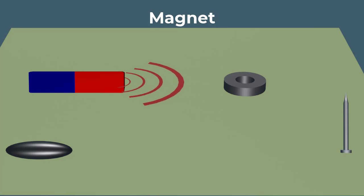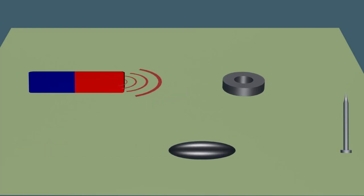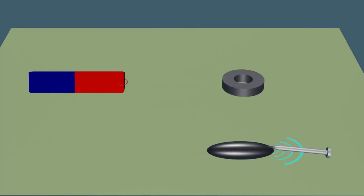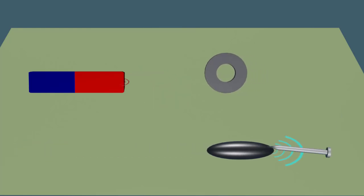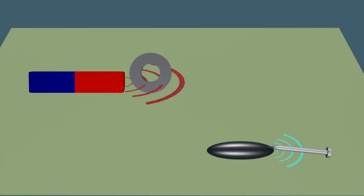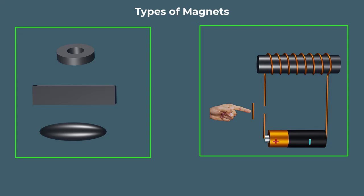A magnet is a material or object that generates a magnetic field. This invisible force is responsible for the most remarkable property of magnets: their ability to attract or repel other magnetic materials. There are two main types of magnets.